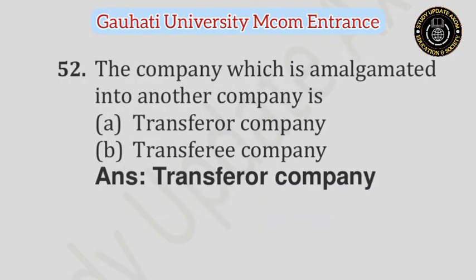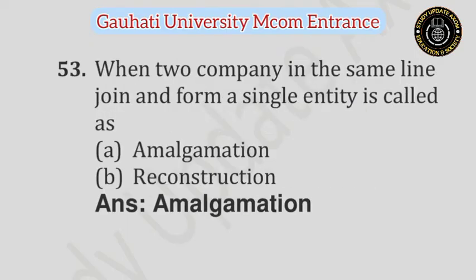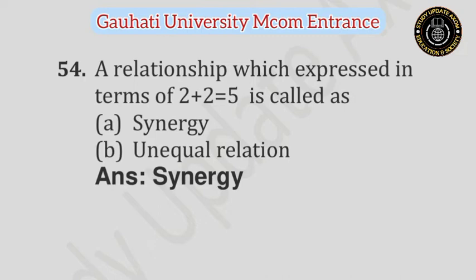Question number 52: The company which is amalgamated into another company is — Option A: Transferor company, Option B: Transferee company. Answer is Transferor company. Question number 53: When two companies in the same line join to form a single entity, it is called — Option A: Amalgamation, Option B: Reconstruction. Answer is Amalgamation. Question number 54: A relationship which is expressed in terms of 2+2=5 is called — Option A: Synergy, Option B: Unequal relation. Answer is Synergy.